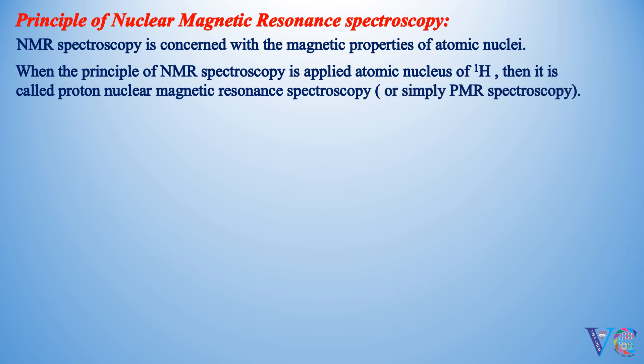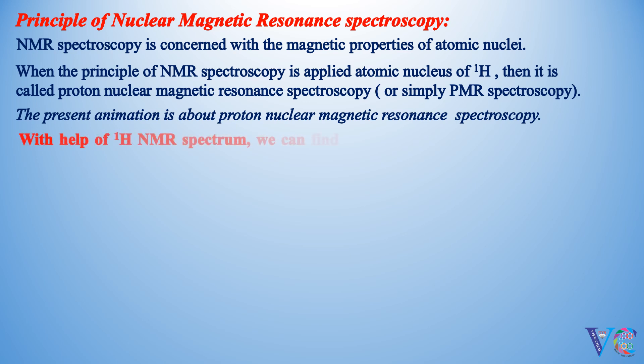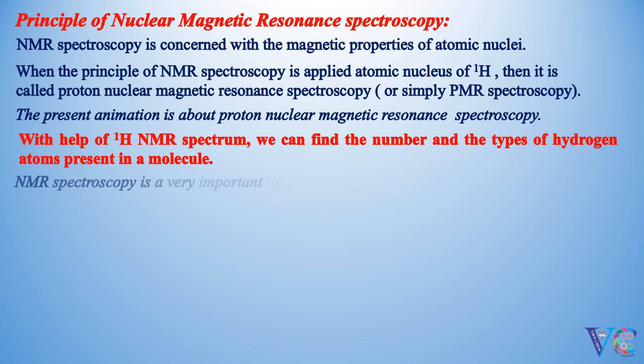The present animation is about proton-nuclear magnetic resonance spectroscopy. With the help of 1H NMR Spectrum, we can find the number and the types of hydrogen atoms present in a molecule. NMR Spectroscopy is a very important tool in the structural determination of organic molecules.